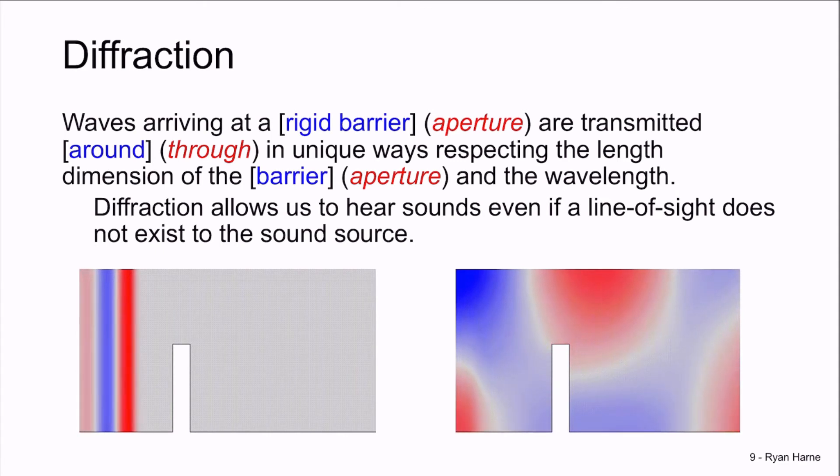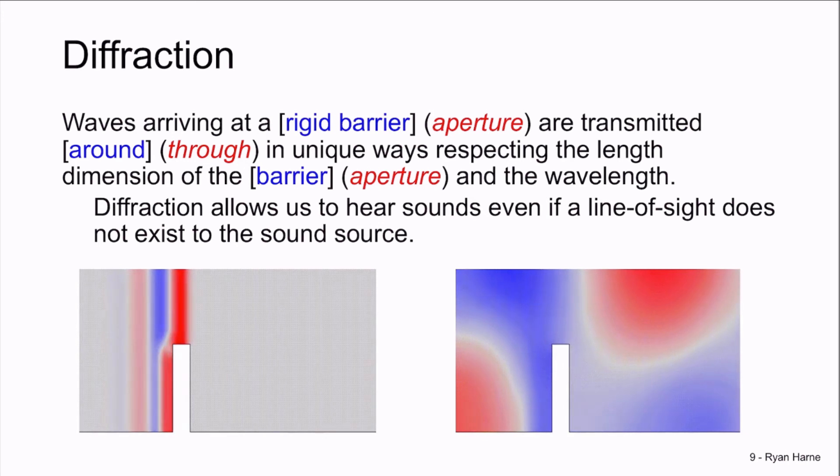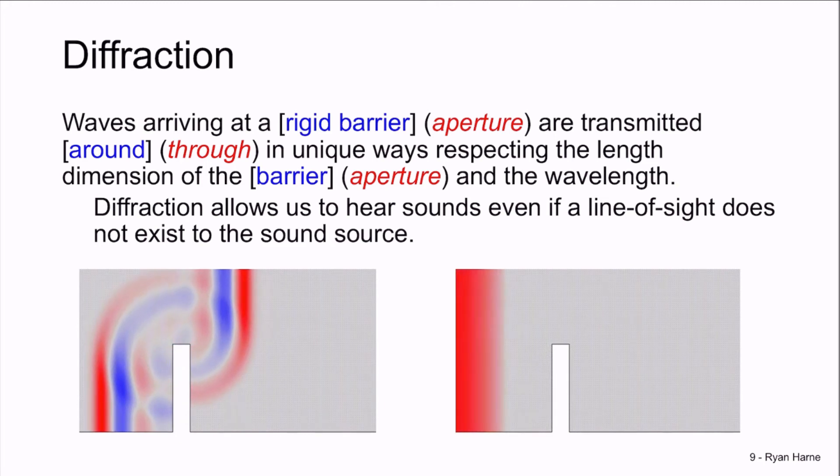This same phenomenon occurs with waves at apertures, which are effectively holes or openings in rigid walls. This same type of wavelength and dimension relationship occurs that governs diffraction through apertures.